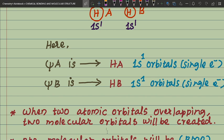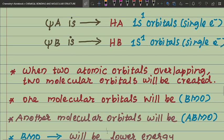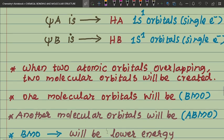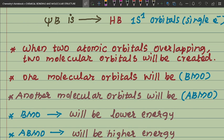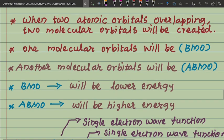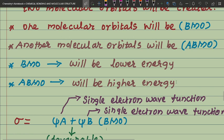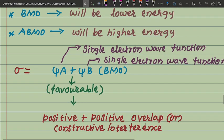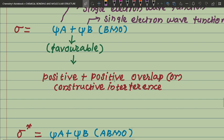psi-B is hydrogen atom B, a 1s orbital with a single electron. When two atomic orbitals overlap, two molecular orbitals are created: one is the Bonding Molecular Orbital (BMO) and the other is the Antibonding Molecular Orbital (ABMO). BMO has lower energy; ABMO has higher energy. For BMO: sigma equals psi-A plus psi-B. This is bond favorable, with constructive interference — positive plus positive overlap.